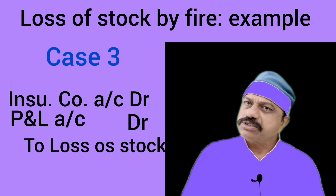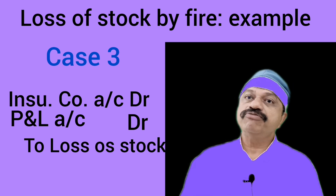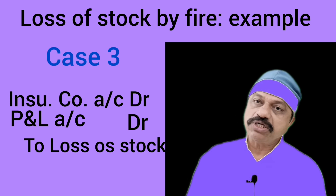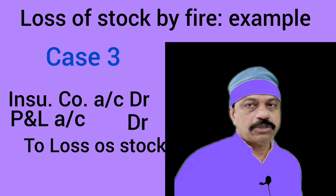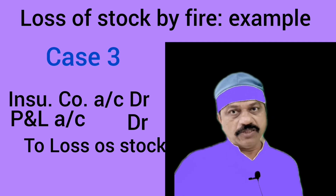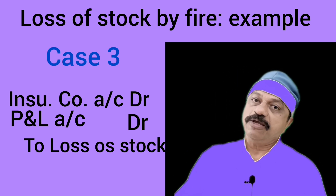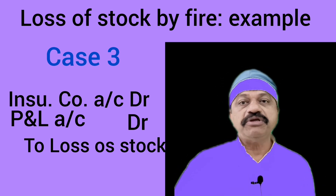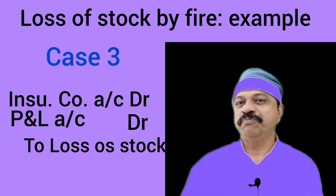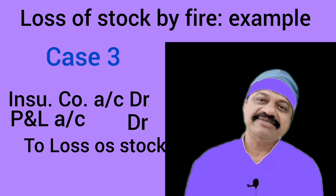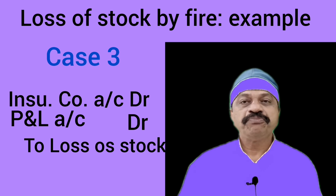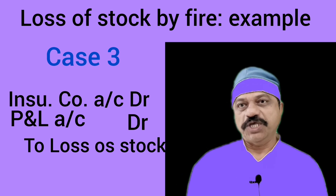Case number three: stock was partly insured and the claim of Rs. 3,000 was accepted by the insurance company. Here, the claim admitted by the insurance company is less than the value of stock destroyed by fire. In this case, the insurance company's account is debited with the claim of Rs. 3,000 accepted by the insurance company, and the profit and loss account is debited with the portion of the loss not covered by insurance, i.e. Rs. 2,000. The adjusting entry is: insurance company's account Dr. Rs. 3,000, profit and loss account Dr. Rs. 2,000, to loss of stock account Rs. 5,000.